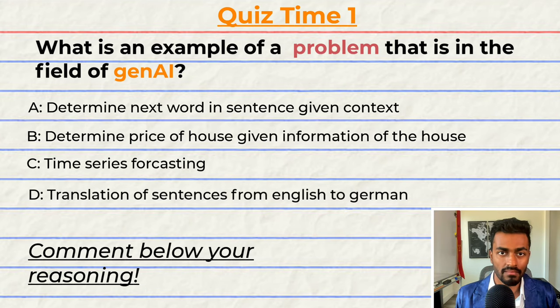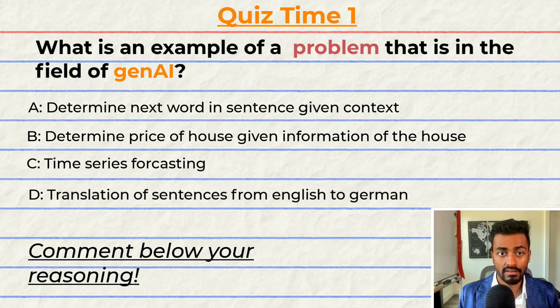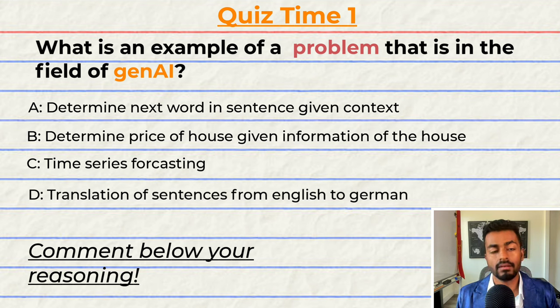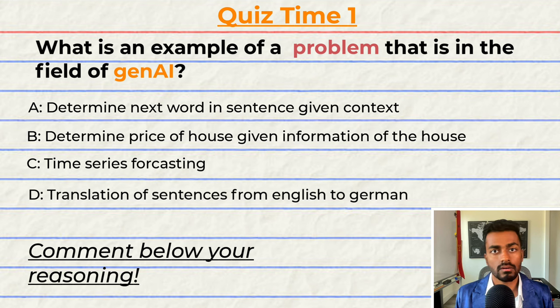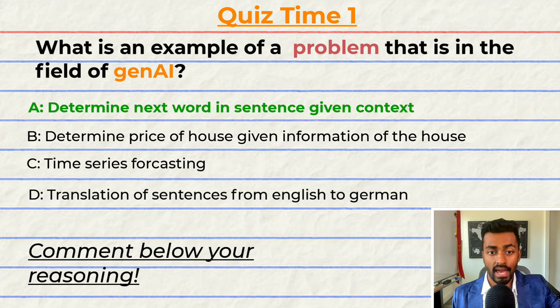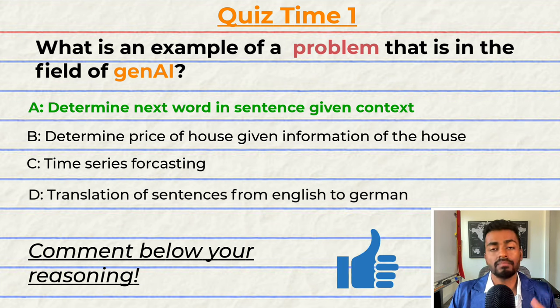Quiz time! Have you been paying attention? Let's find out. What is an example of a problem in the field of Gen AI? A: Determine the next word in a sentence given the context. B: Determine the price of a house given information about the house. C: Time series forecasting. Or D: Translation of sentences from English to German. Note that multiple answers may be correct. The correct answer is A. Can you tell me why? Give your reasoning in the comments below. And if you think I deserve it, please do consider giving this video a like.